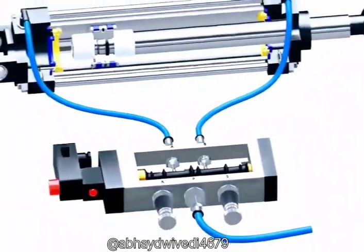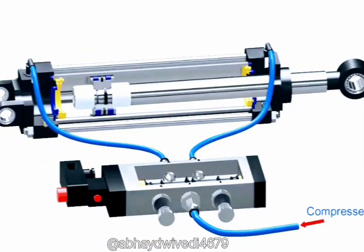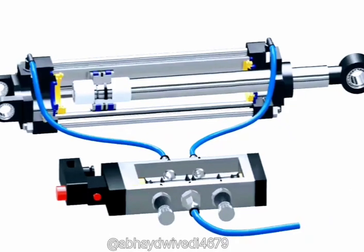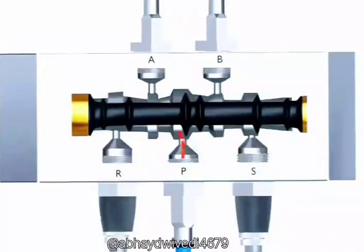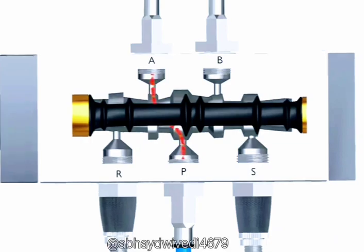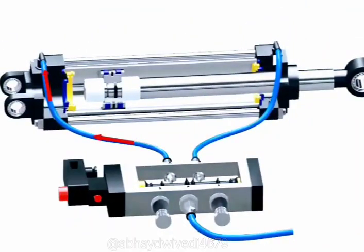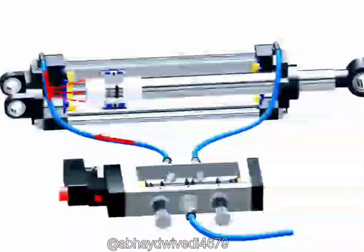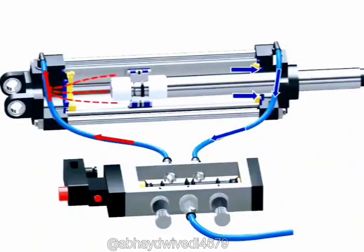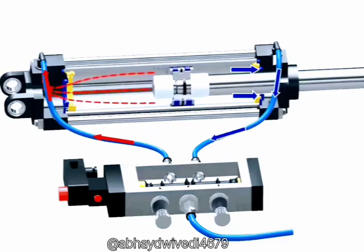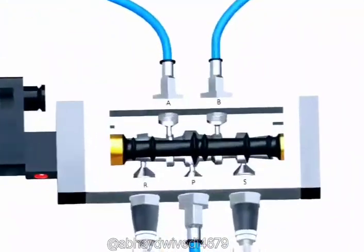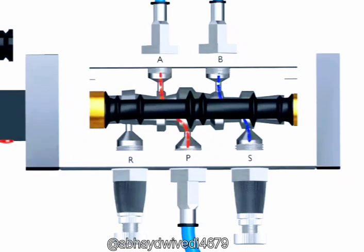Now let's understand how a pneumatic cylinder works. Compressed air is supplied through inlet port P of the valve. The valve directs air to a particular direction, which we can observe in the animation. In this case, the air is directed to port A. This high-pressure gas is then transferred to the cap end of the cylinder through the pneumatic hose, creating high pressure that pushes the piston towards the head end. This also pushes gas from the head end, and this exhaust gas travels through the other hose back to the valve. The valve directs this gas towards port S and allows it to escape through a pneumatic muffler, which helps to reduce any noise produced during exhaust.